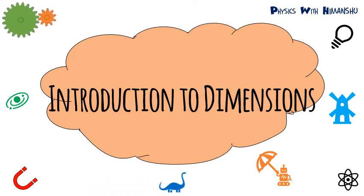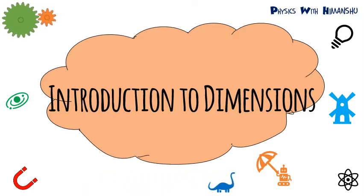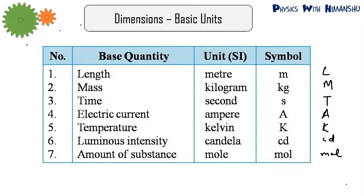Hello everyone. Today we'll be revising dimensions and dimensional analysis. First we will learn the basics again, then move to dimensional analysis. In physics we have some base quantities — the meaning of base quantities is that all the formulas of physics have been derived from these seven base units. The formulas derived with the help of these base units are called derived units.